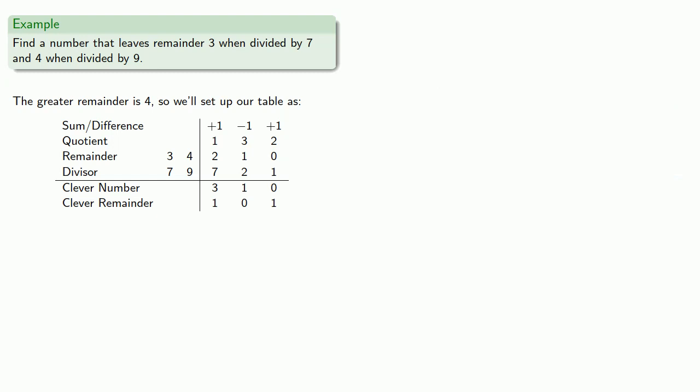Since this is the last column, we can find our solution directly. The clever number times the divisor plus the remainder gives us a number that is 4 more than a multiple of 9, and also 3 more than a multiple of 7.